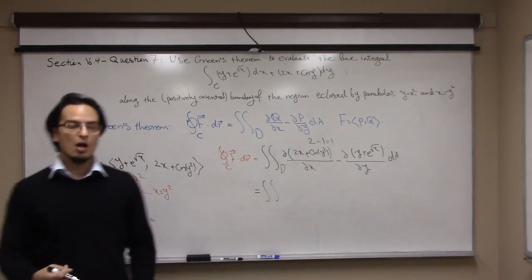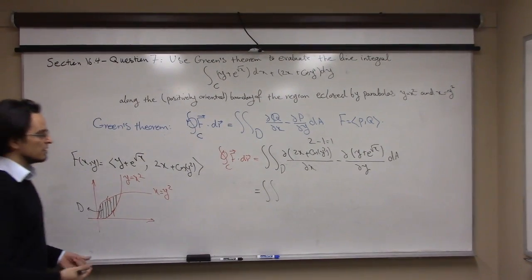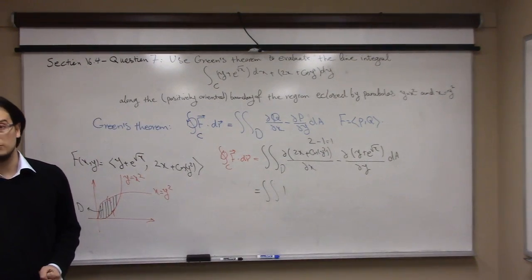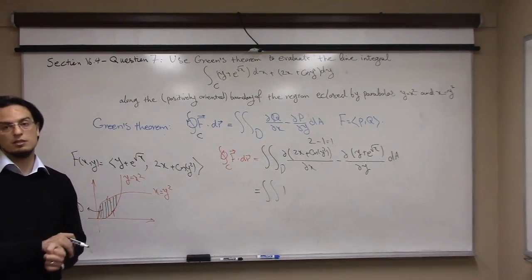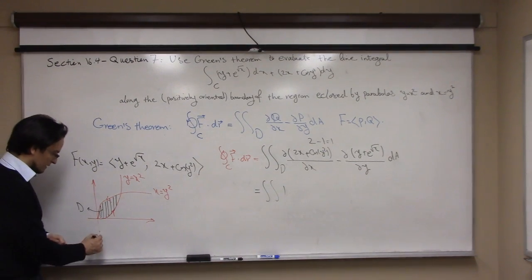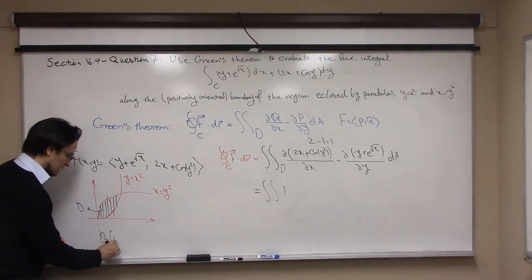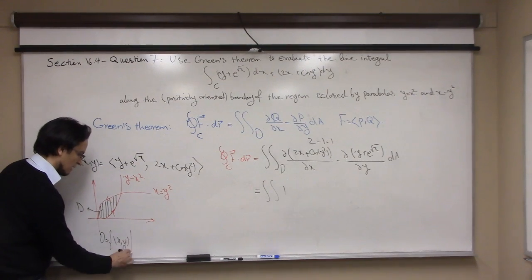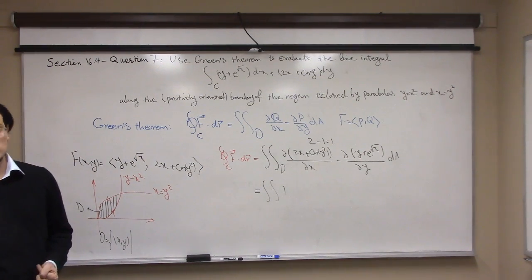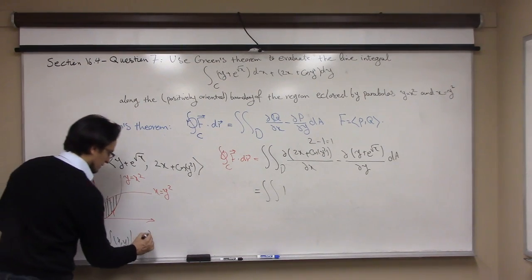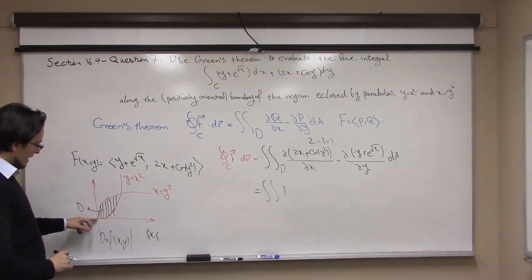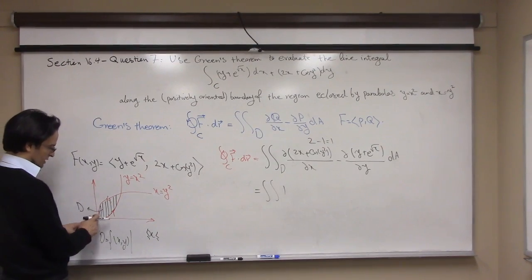Computing those partial derivatives gives 2 minus 1, which equals 1. The integrand is simply 1. Now to evaluate the double integral, I need to convert it to an iterated integral by writing the region D in Type 1 form.